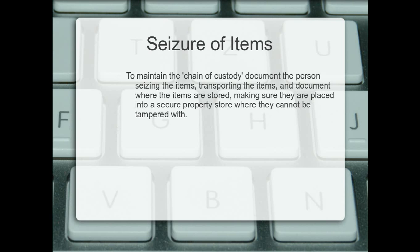Chain of custody — again it's a law enforcement thing, but it doesn't hurt for corporate people to do this as well. Cover your ass. Make sure that if anybody asks you where the computer was at any point in time after you've seized it, you can tell them. Make sure that every change of hands is documented and it's documented where it's kept. Make sure it's kept in a secure store, because you don't want the cleaner switching it on, kicking it over, or hoovering up your screws if you're disassembling at your desk. It does happen, believe me.